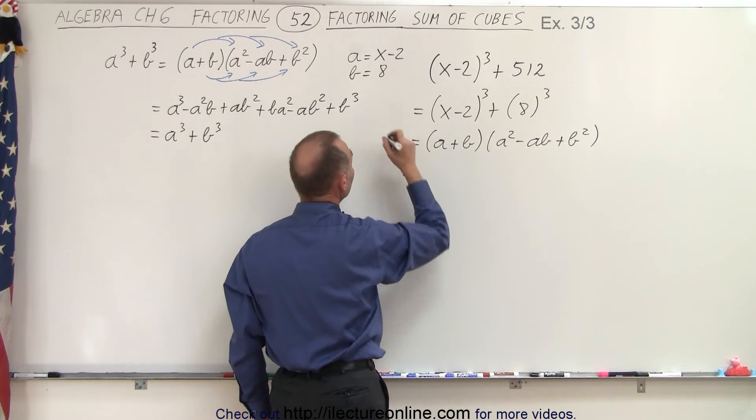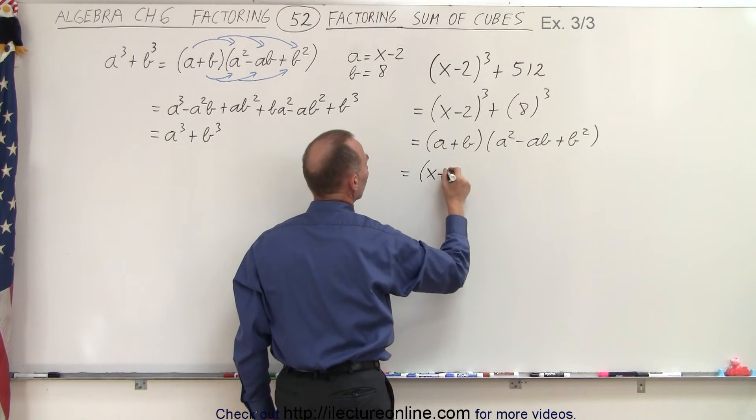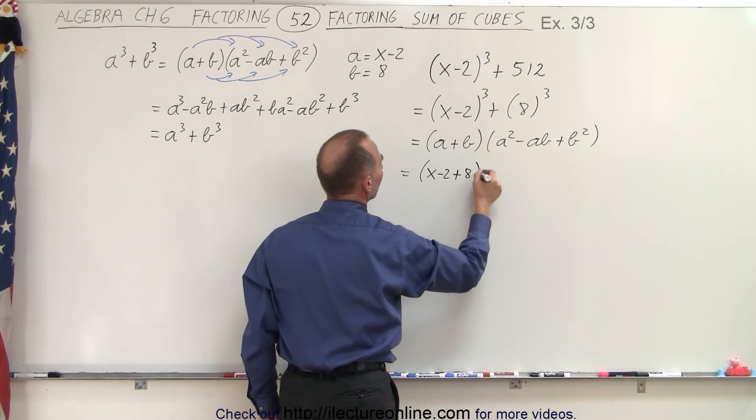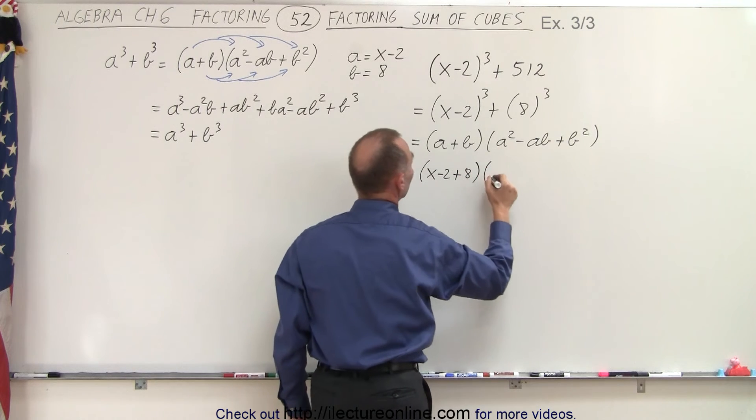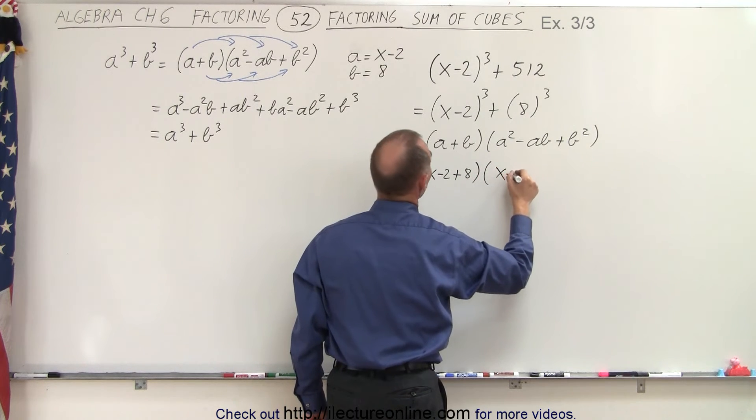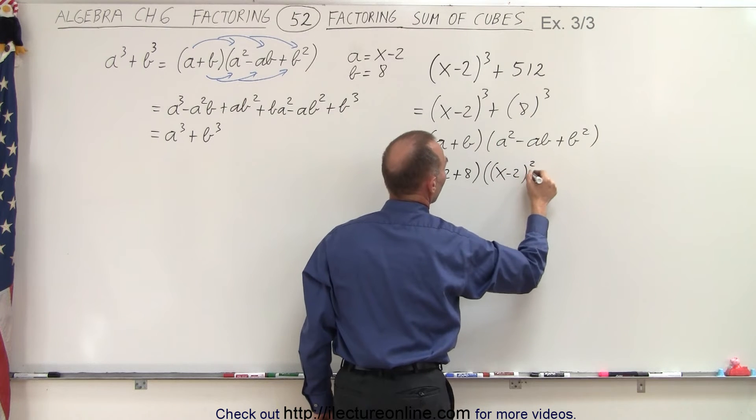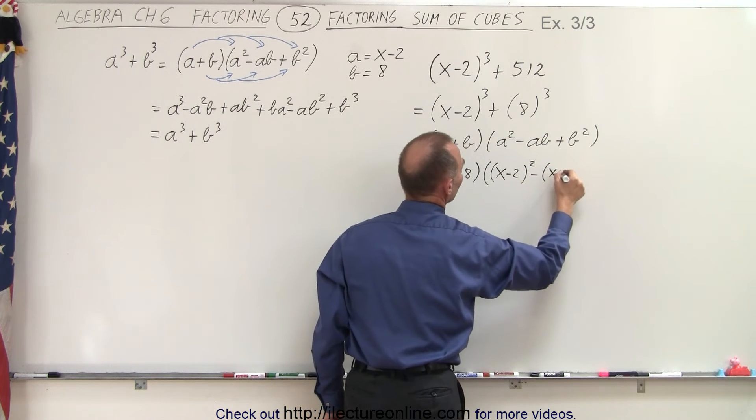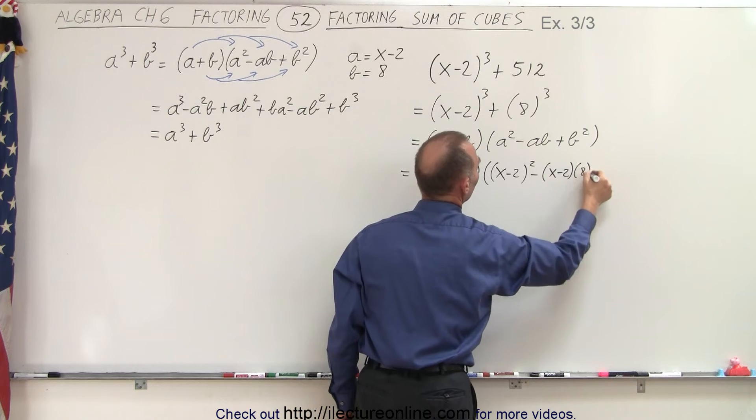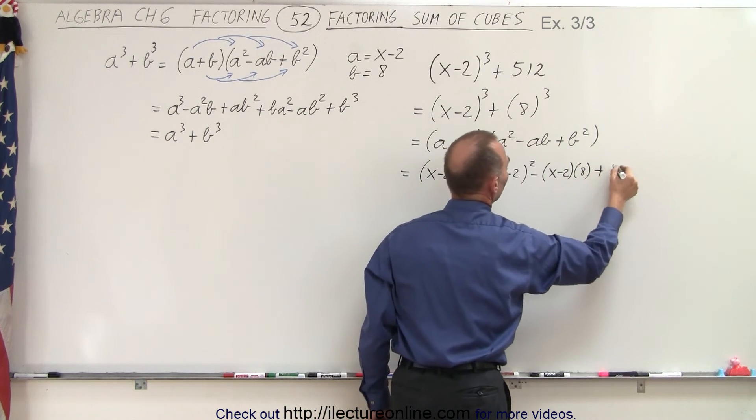So that means that a being x-2 plus b which is 8, times a² which is (x-2)², minus a times b, (x-2) times b which is 8, and then plus 8².